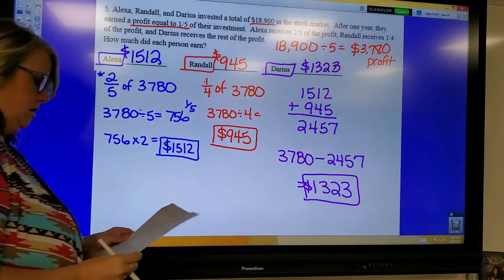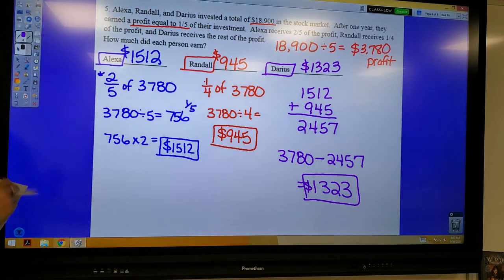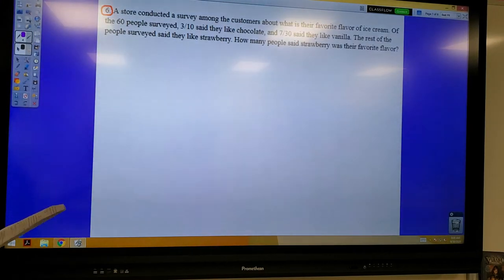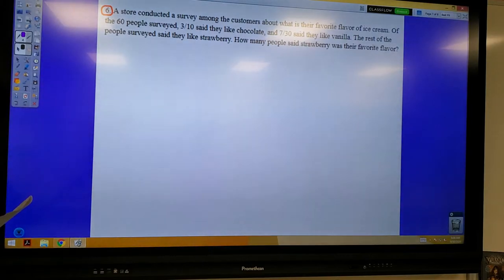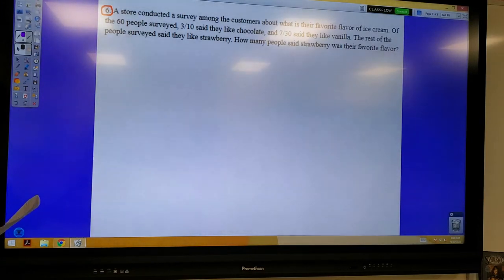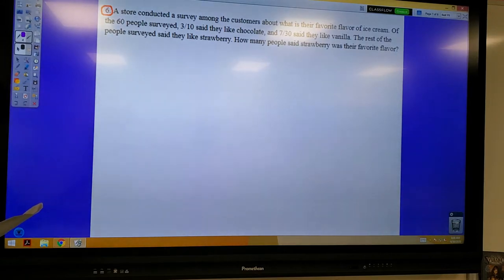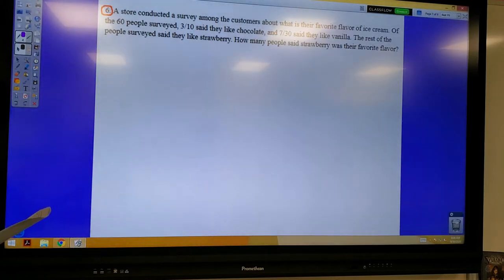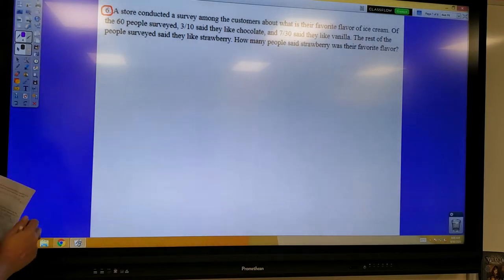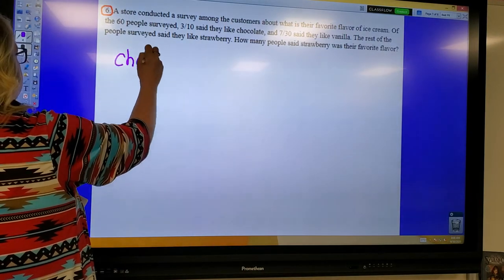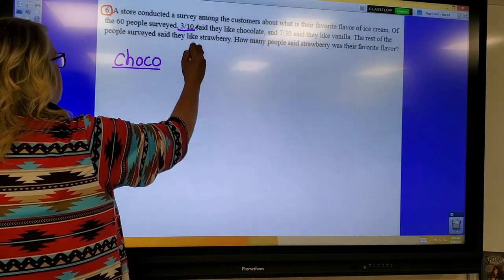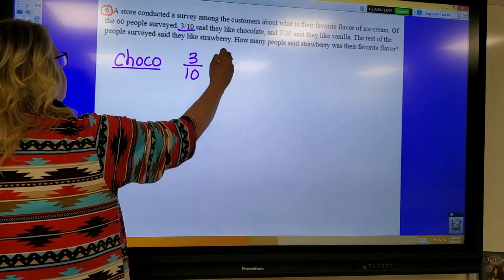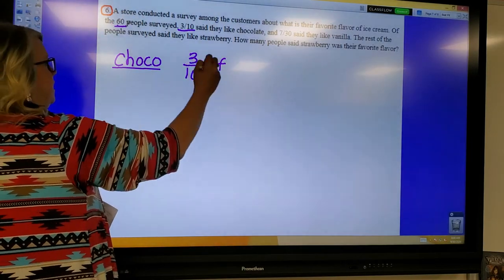All right, moving on to question number six. Question six says, A store conducted a survey among the customers about what is their favorite flavor of ice cream. Of the 60 people surveyed, three tenths said they like chocolate, and seven over 30 said they like vanilla. The rest of the people surveyed said they like strawberry. How many people said strawberry was their favorite flavor? So let's start with the chocolate. I'm just going to put choco. For choco, three tenths said they like chocolate. Three tenths of what? Three tenths of the people that were surveyed, which is 60 people.